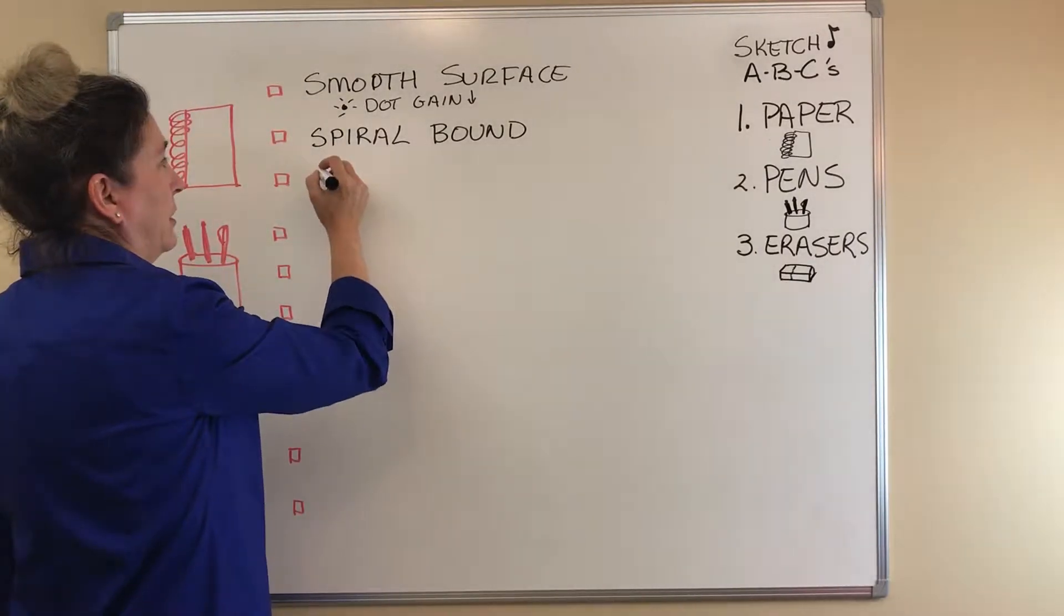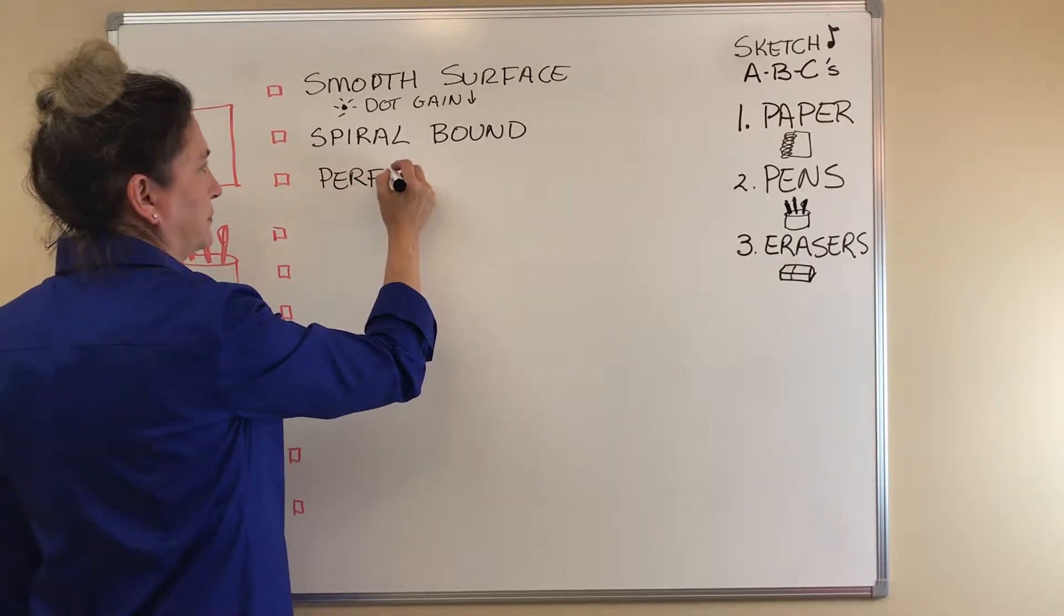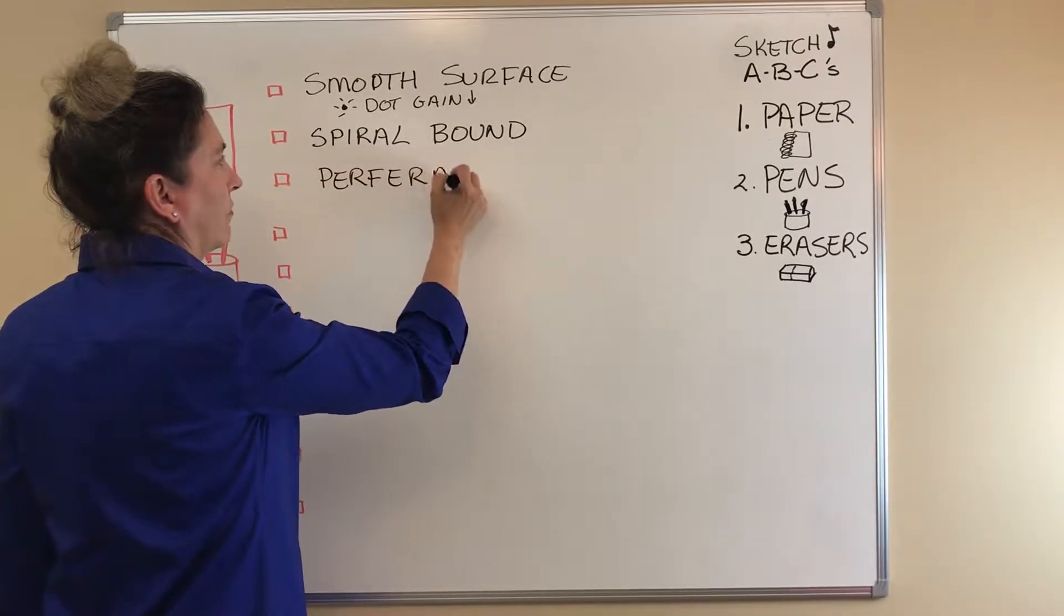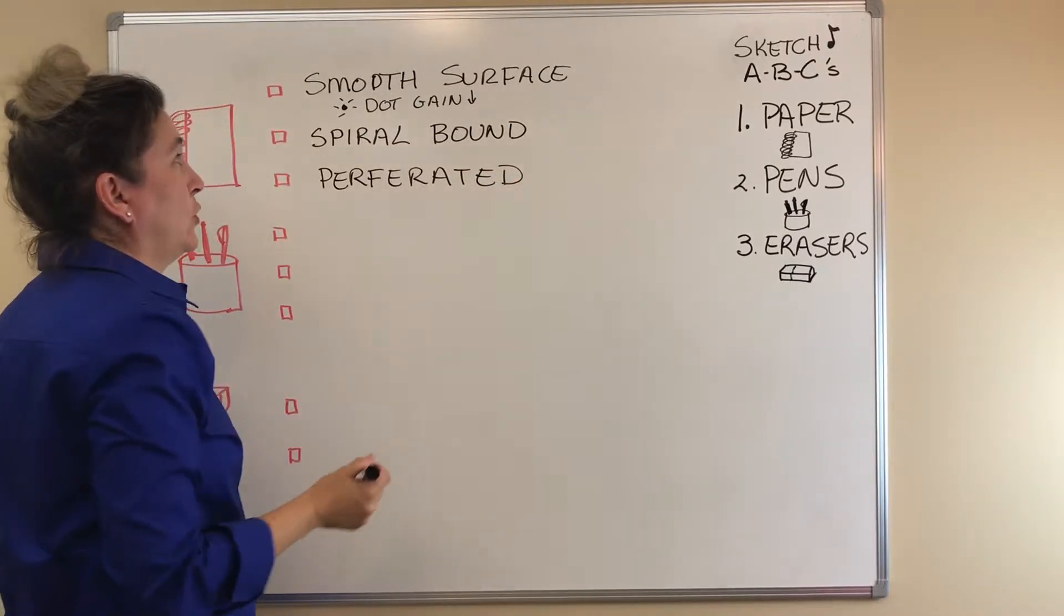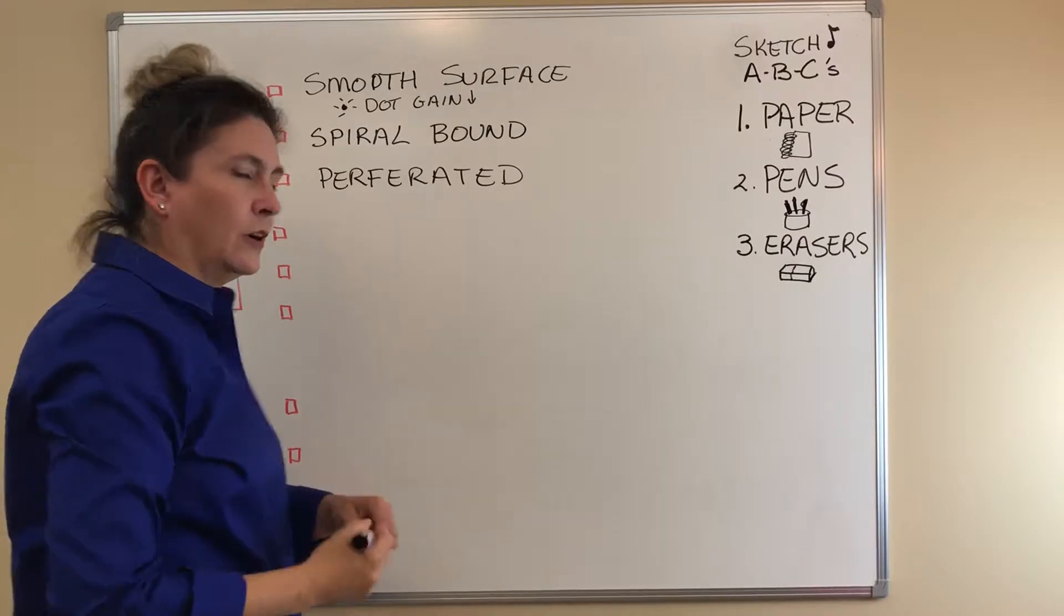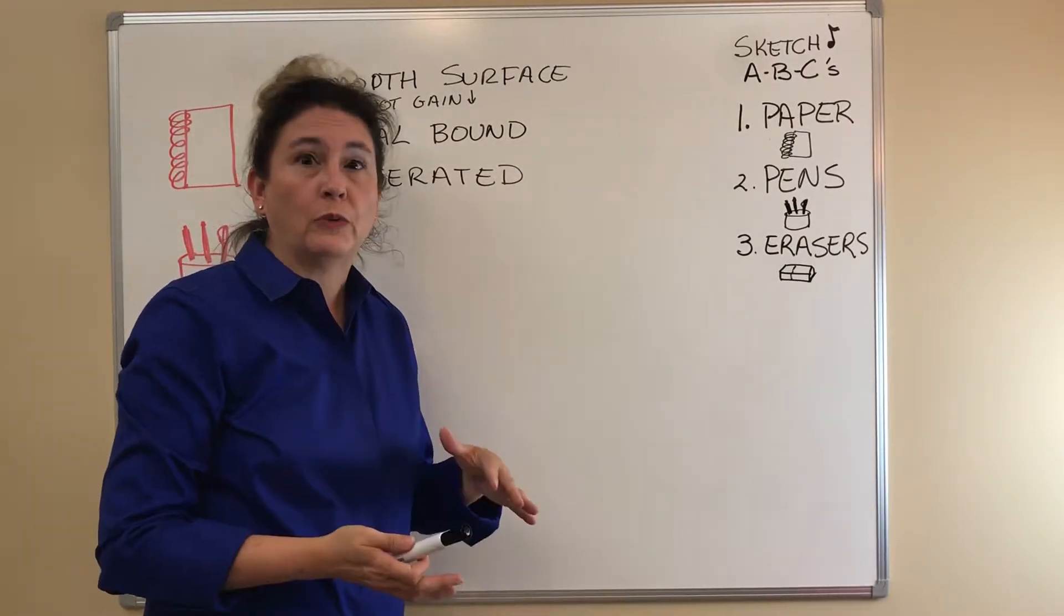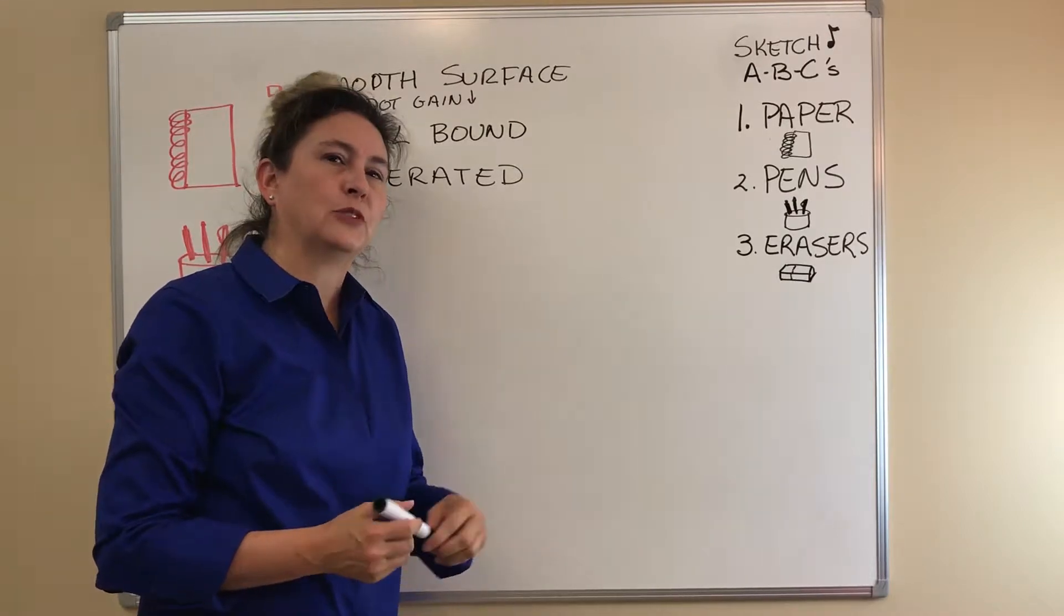And then the last part is bonus if it's perforated. Then you can take it out, take a picture of it, things like that. So those are things to look for. Also I always like to buy my sketchbooks in two or three when I find the right kind because sometimes it's hard to find.